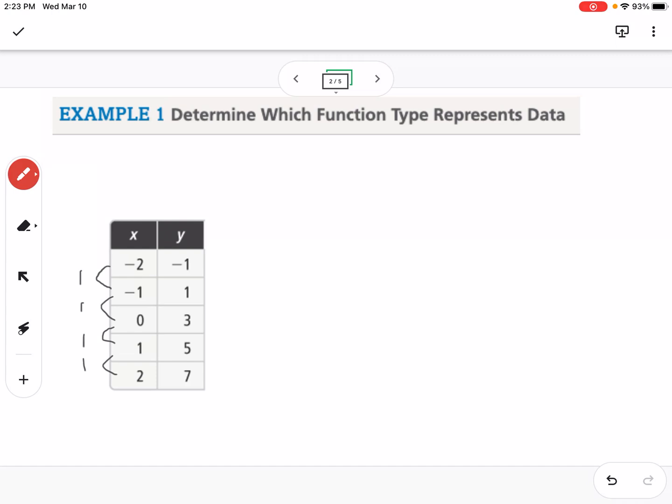And so then we turn our attention to the y's. So we figure out to go from negative 1 to 1, that's going up 2. From going to 1 to 3, that's also adding 2. 3 to 5, adding 2, and 5 to 7, adding 2. So those are what we call the first differences. So if they are all the same, if the first differences are constant, then this is a linear function.